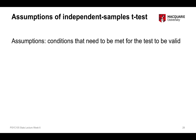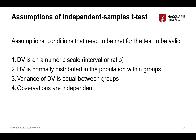Going back to our assumptions: our dependent variable is on a numeric scale, which we can confirm just by looking at the data. We also know that observations are independent, both within and between groups, because that's a product of the study design itself. However, the other two assumptions — normal distribution and equality of variances — need to be tested by actually looking at the data.